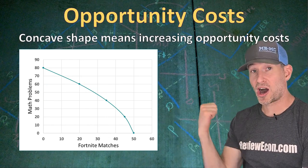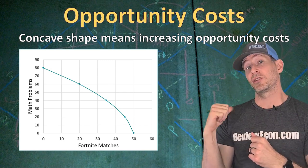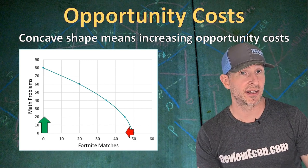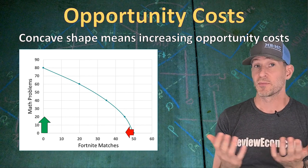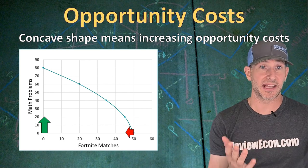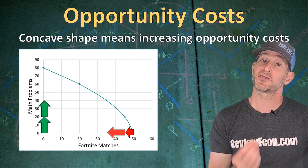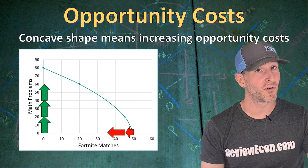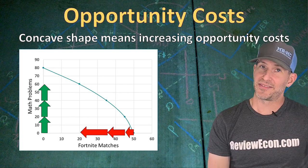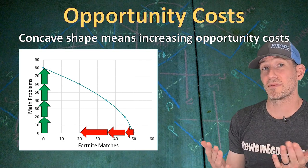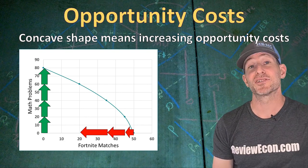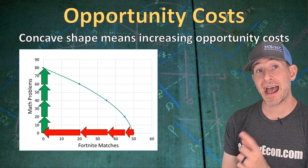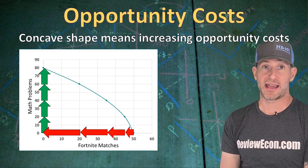When you see a Production Possibilities Curve that is concave — bowed out from the origin — that means the two goods being produced have increasing Opportunity Costs. The first 20 math problems have a small Opportunity Cost because you do the easiest math problems first, perhaps ones that don't require much work. The second 20 math problems have a slightly higher Opportunity Cost because you're doing more difficult problems, giving up more matches of Fortnite. The next 20 are more difficult and you give up even more Fortnite matches. Those last 20 math problems — probably word problems where you show your work — result in giving up a large amount of Fortnite matches. So with that bowed-out shape, as we continue to do more and more math, the Opportunity Cost of doing that math increases.